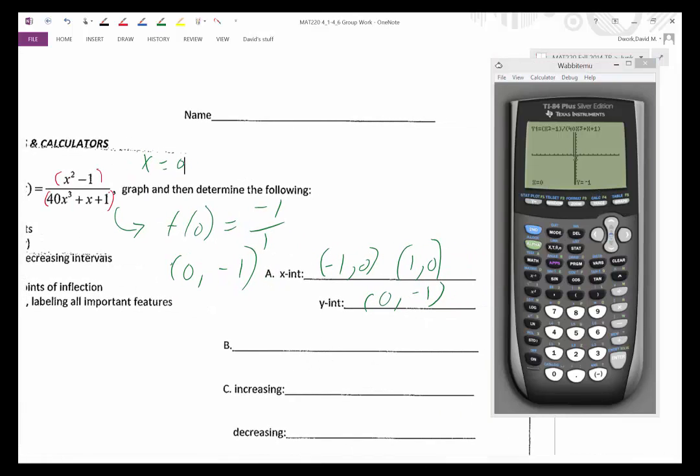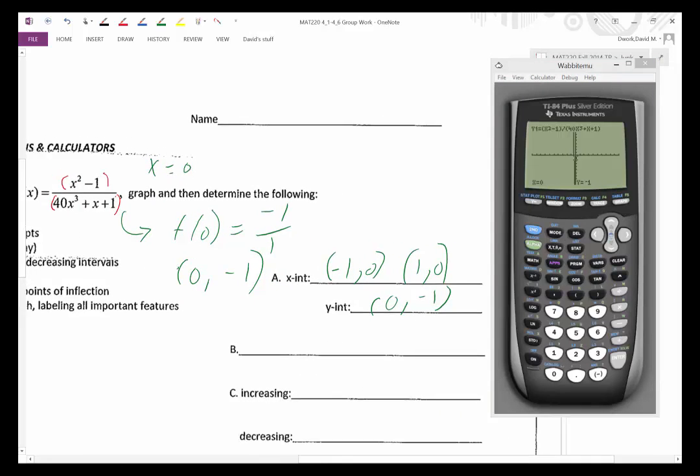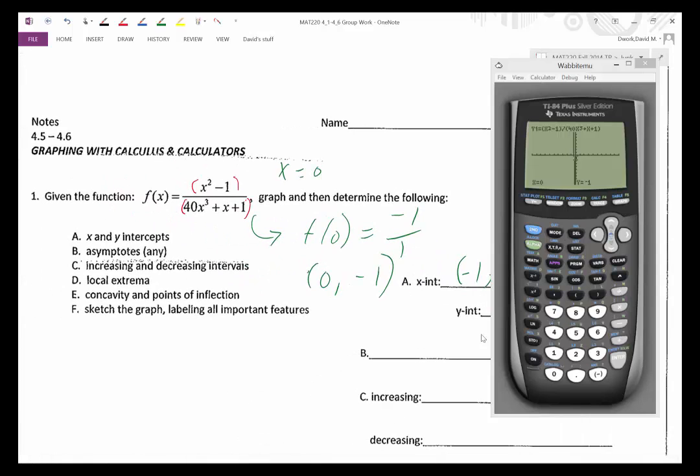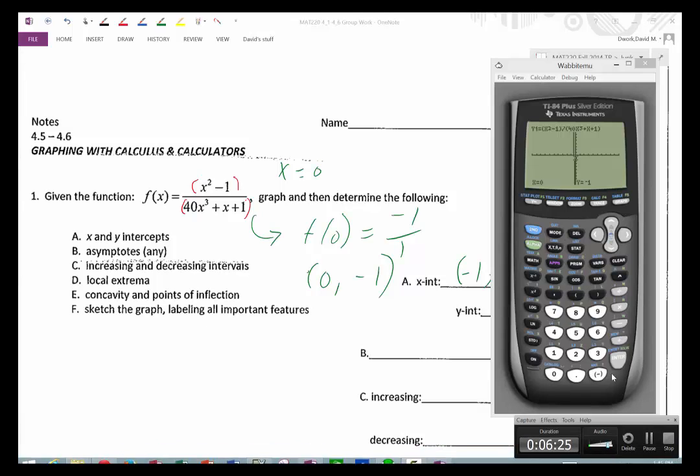So, there you go. There's our y-intercept of 0, negative 1. So, I hope this video helps. The idea covered here is finding x-intercepts and y-intercepts.